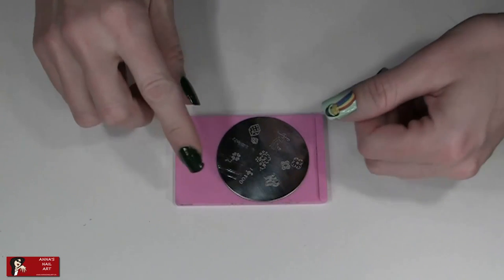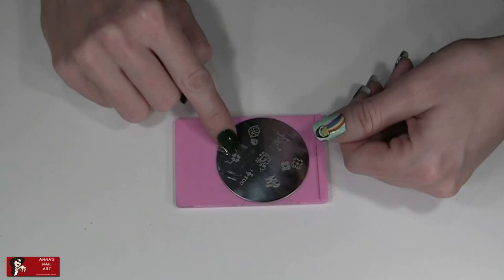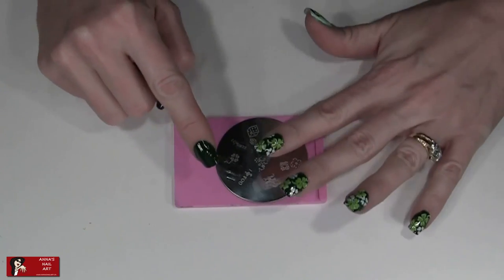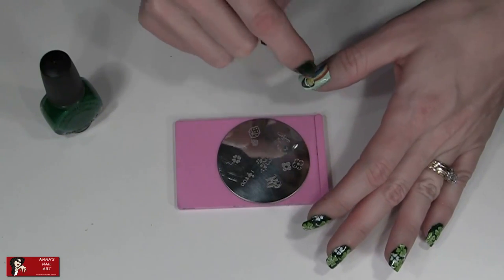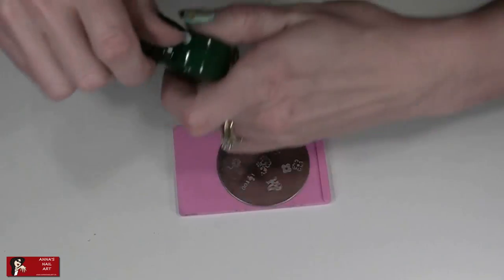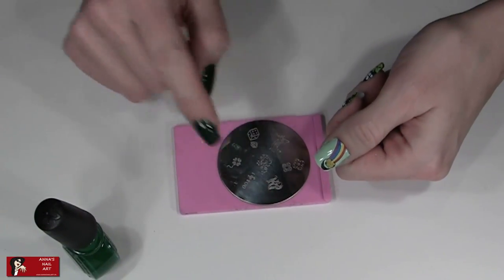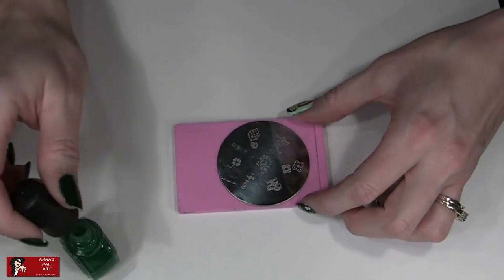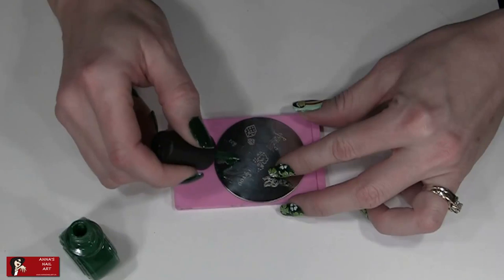For our last step, we're going to use our M22 plate. And we're going to do the small four leaf clover like we did over here in white on your other nails. And we're going to put that in our gaps to fill in the background a little bit. If I had a little leprechaun, I would put the leprechaun there, but I don't have a leprechaun yet. Maybe I will design one.